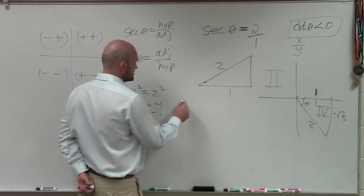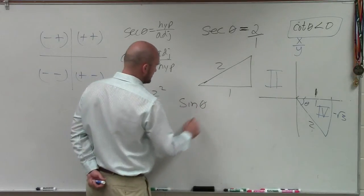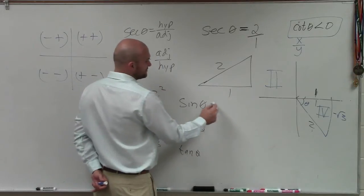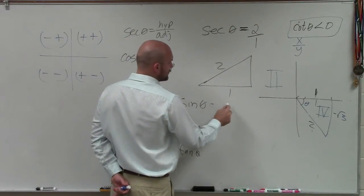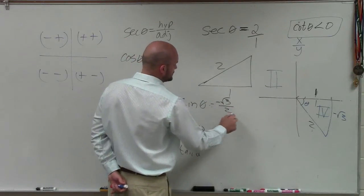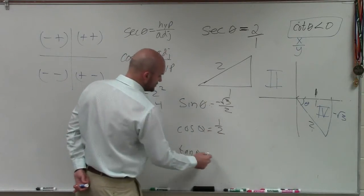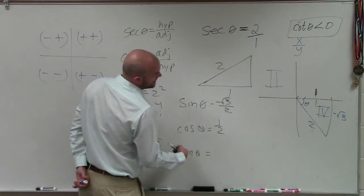I'll just do sine, cosine, and tangent, just so we can get this done and get home. Sine of theta is opposite over hypotenuse. So it's negative square root of 3 over 2. Cosine is adjacent over hypotenuse, which is 1 over 2. And tangent is going to be opposite over adjacent.